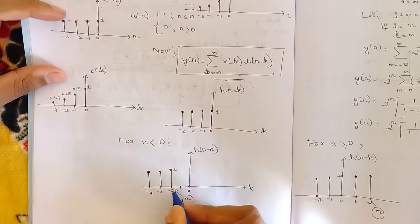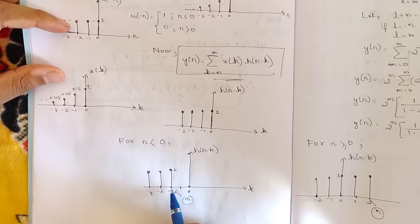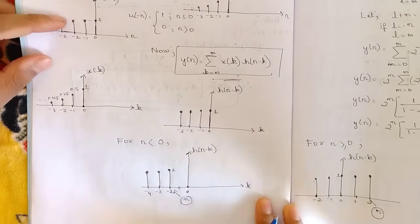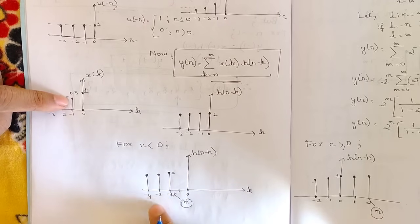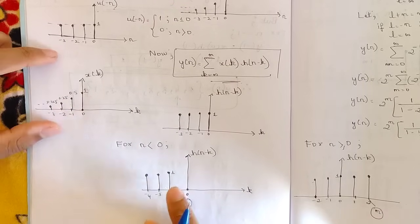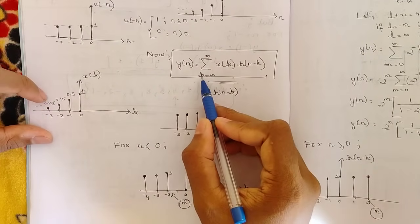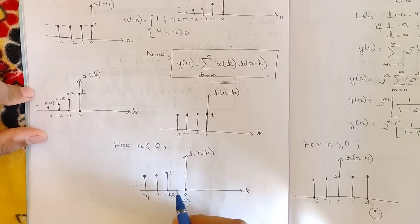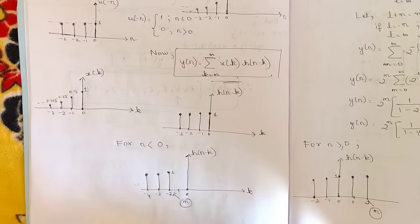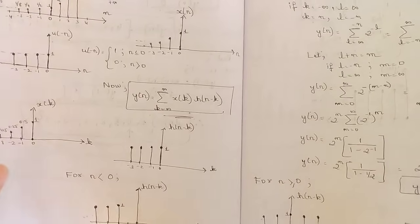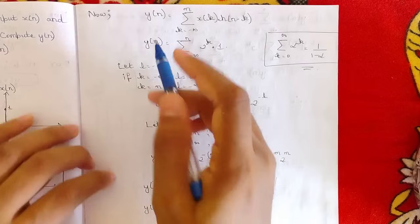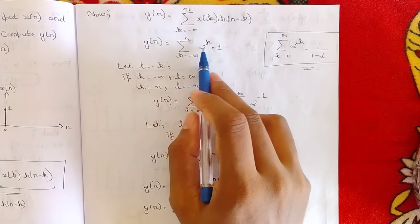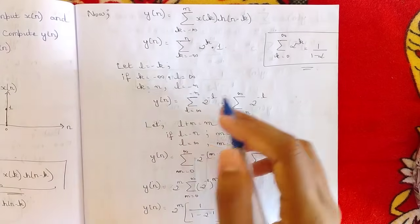For n < 0, taking an example like n = −2, the h(n−k) plot has amplitude 1 according to the impulse response definition. Comparing x(k) and h(n−k), overlapping occurs up to n, so the summation limits become k = −∞ to n. Beyond n (e.g., −1, 0) there is no overlapping. So y(n) = summation from k = −∞ to n of x(k) · h(n−k) = summation from k = −∞ to n of 2^k · 1.